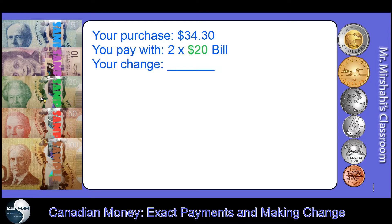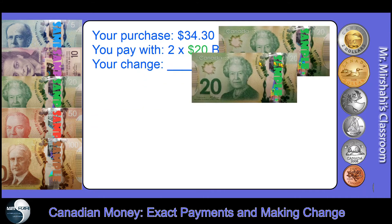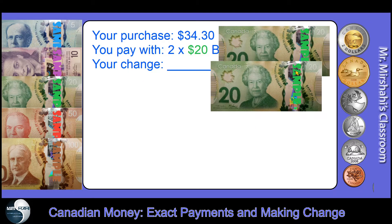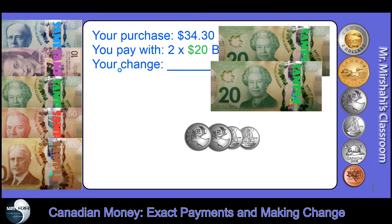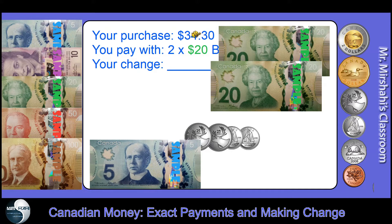Going down in value: 25 cents, another quarter makes 50 cents, a dime makes 60 cents, a nickel makes 65 cents — so that's exact payment. Next example: your purchase amount is $34.30, and you want to pay with two $20 bills — that's $40 — so you should get some change back. Count up from $34.30 to $40: add a dime to get to 40 cents, that makes 50 cents. Two quarters bring it to $35, then $5 more gets to $40. Your change is $5.70.